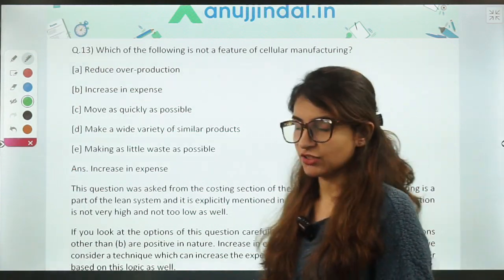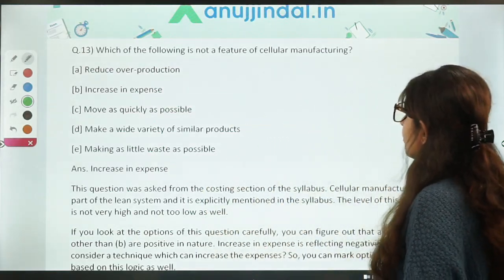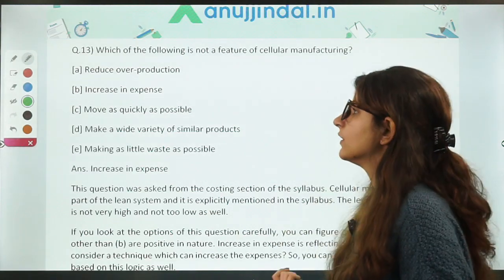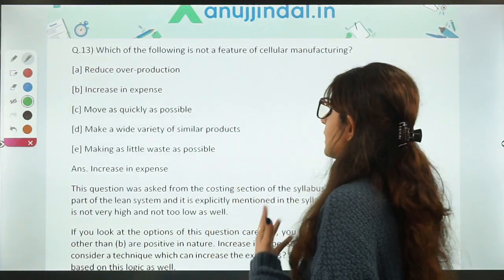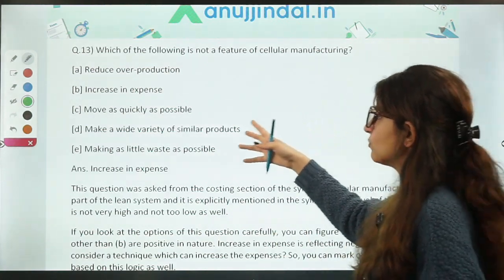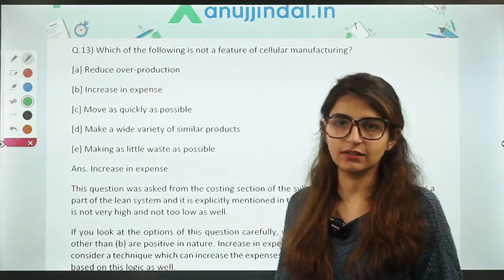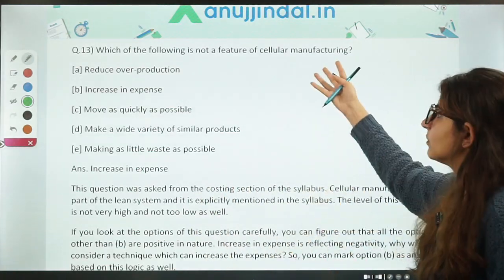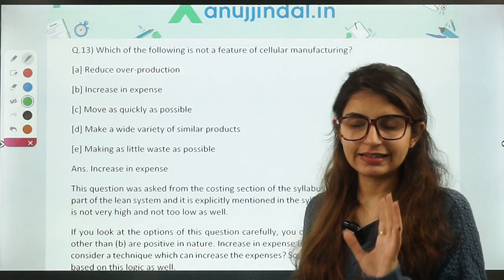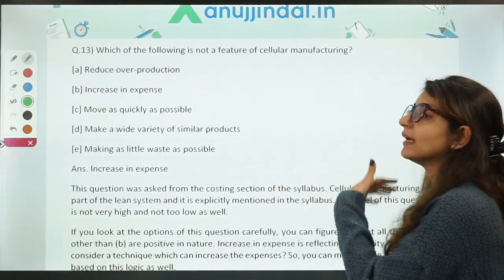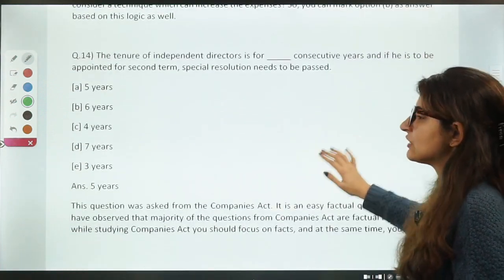Which of the following is not a feature of cellular manufacturing? A doable question, as cellular manufacturing is separately covered in the costing section of the syllabus. Generally, new production or cost methods aim to reduce wastage, increase production, or reduce expenditure. The options included reduce overproduction, increase in expense, and move as quickly as possible. Increase in expense is not an advantage, so logically it's not a feature — but concept knowledge is essential because logic doesn't always work. The answer is 'increase in expense.' Be careful with negative statements: always note whether the question asks for 'not a feature' or 'a feature.'